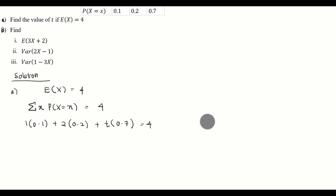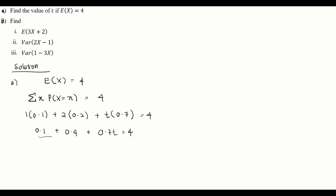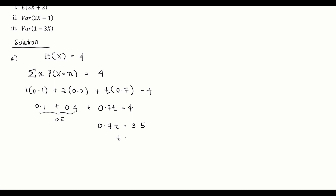This gives us 0.1 + 0.4 + 0.7t = 4. Simplifying, 0.5 + 0.7t = 4, so 0.7t = 3.5. Dividing both sides by 0.7, we get t = 5. So the value of t is 5.